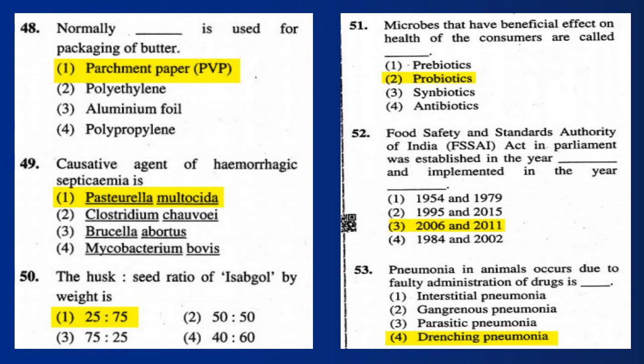Question 49: The causative agent of hemorrhagic septicemia is Pasteurella multocida. Question 50: The husk-to-seed ratio of ISAB gold by weight is 25:75.